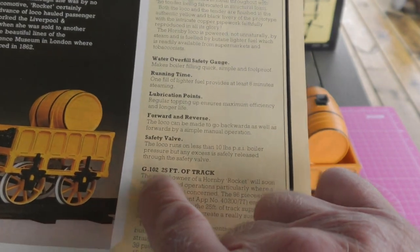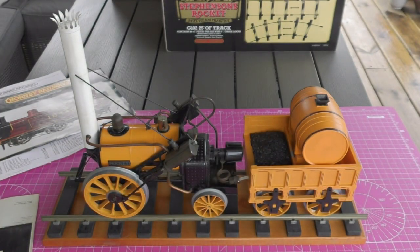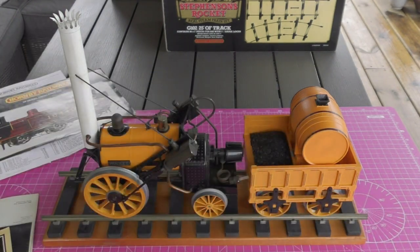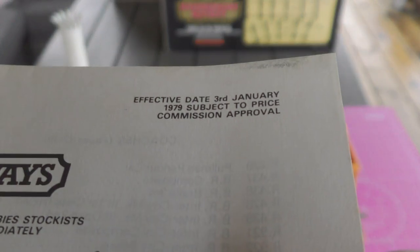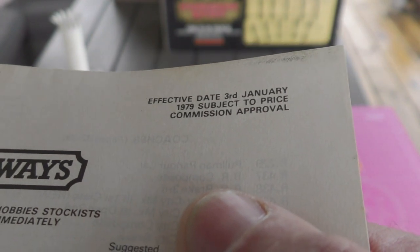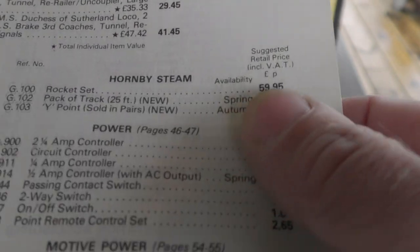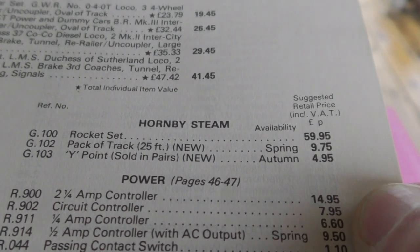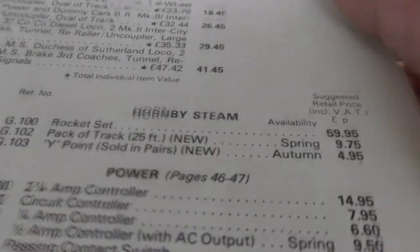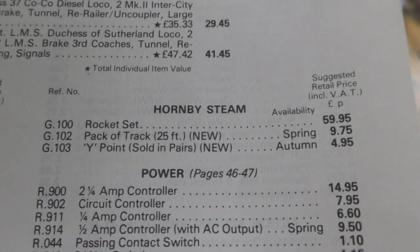On this publication there's no mention of the coach or the points but it does say G102 25 feet of track. That was 1979, so let's take a look at the price list. 3rd of January, I don't know what that means, commission approval, hopefully these are retail prices. Hornby steam, and already we see that it's at the high price of £59.95. G100 rocket set, G102 the track available in spring £9.75, and a pair of Y points £4.95. I bet they're great. No mention of the coach on that price list.